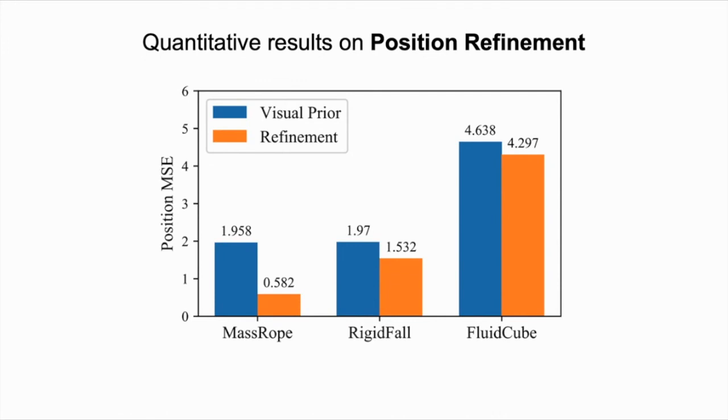Here, we show our model's performance on the position refinement task by comparing particle positions proposed by the visual prior, shown using the blue bar, and after the refinements using our inference module, shown as the orange bars. We use the mean squared error between the ground truth and the predicted positions as the evaluation metric. In all environments, the mean squared error decreases after refinements.